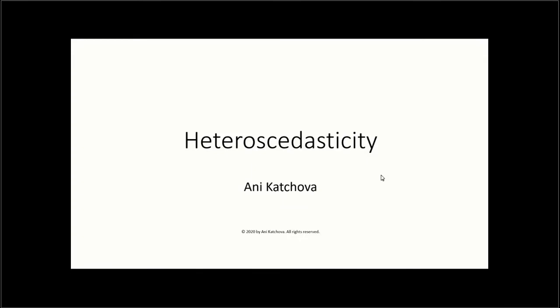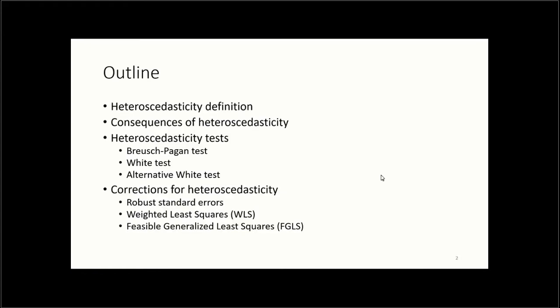In this presentation I will talk about heteroscedasticity. The outline will be: first, the definition of heteroscedasticity; second, the consequences of it; third, different heteroscedasticity tests including the Breusch-Pagan, White, and alternative White tests; and finally, corrections for heteroscedasticity including robust standard errors, weighted least squares, and feasible generalized least squares.